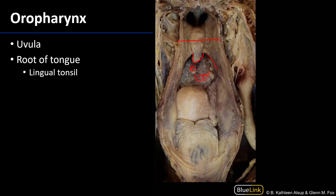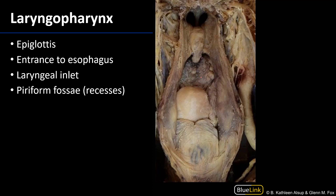There is mucosa-associated lymphoid tissue covering the root of the tongue, or the pharyngeal part of the tongue — the lingual tonsil. As we move into the laryngopharynx, here is that boundary: there's the epiglottis, and here is the pharyngoepiglottic fold just lateral to that.